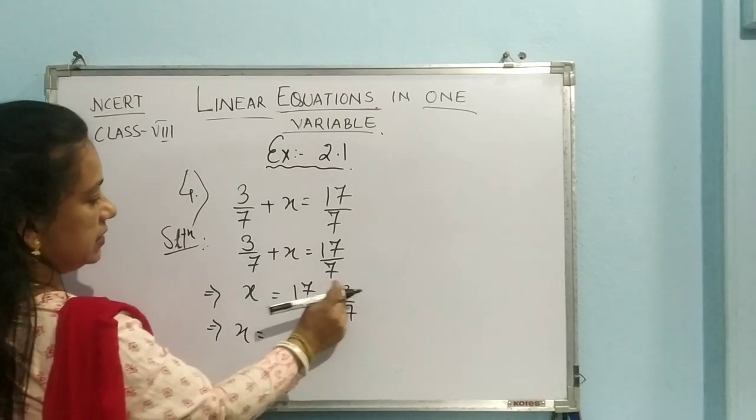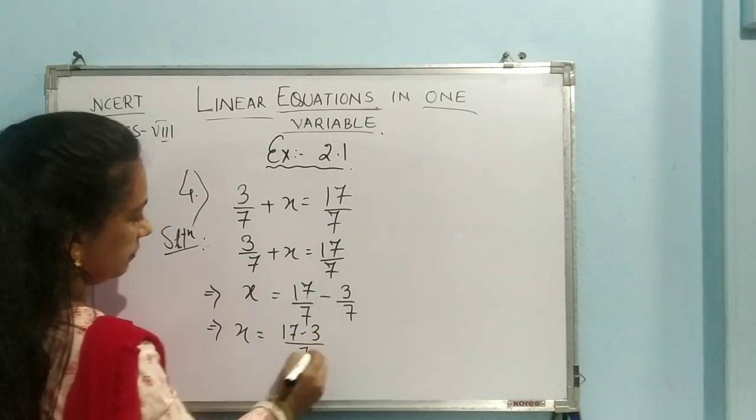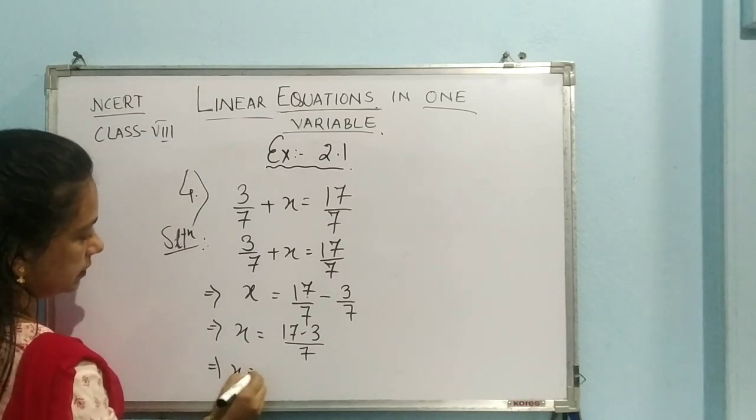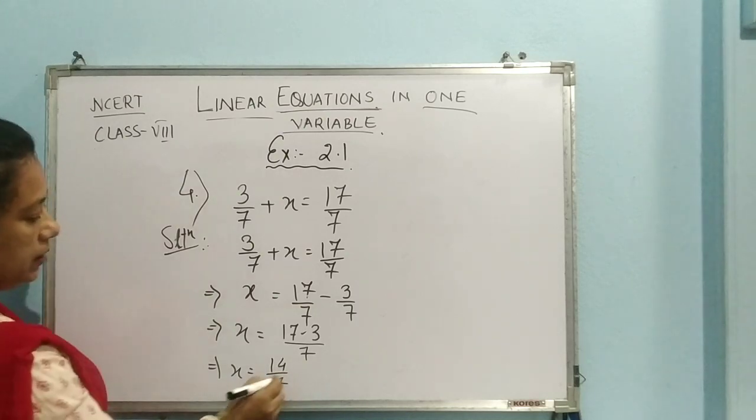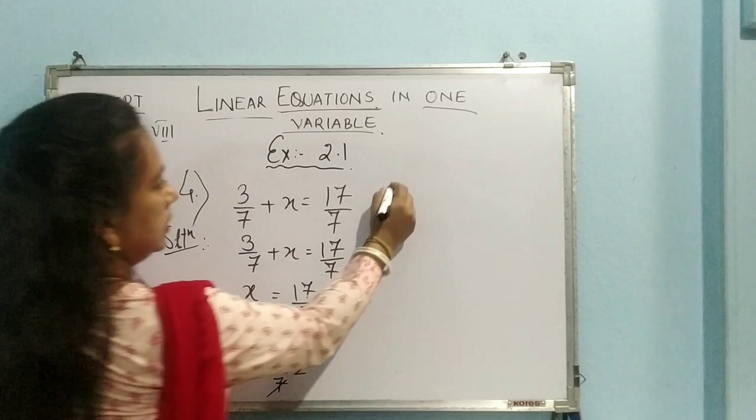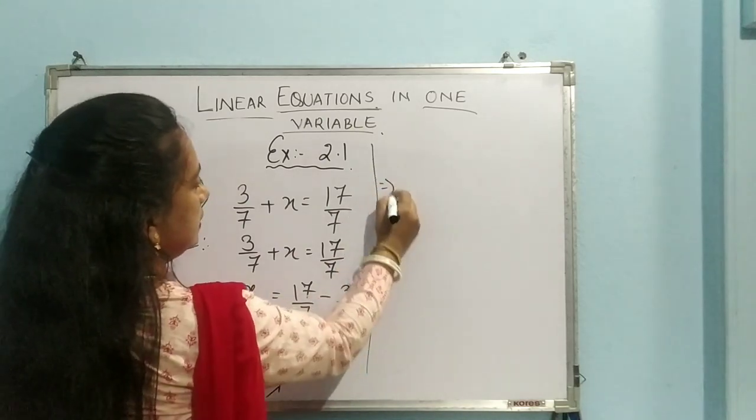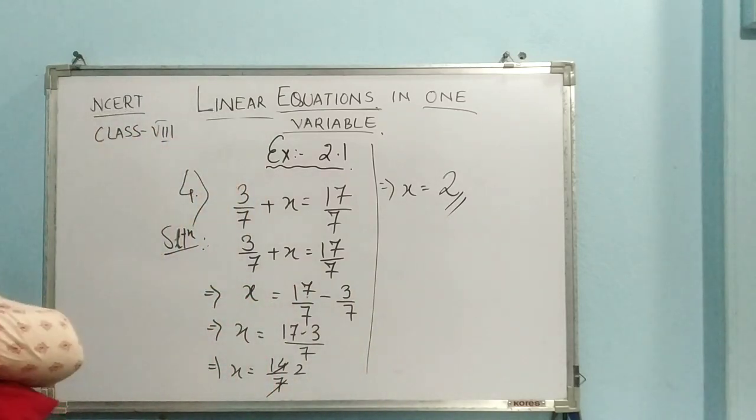So x equal to 17 minus 3 by 7. Implies x equal to 7 minus 3, 14 by 7, that is equal to 2. So here the answer is implies x is equal to 2. So this is the answer.